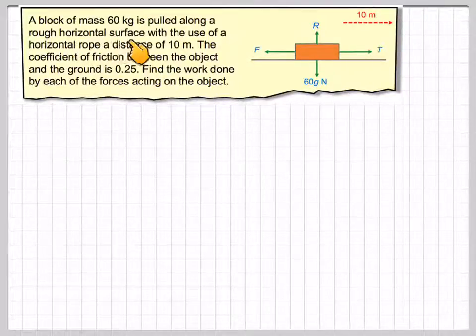A block of mass 60 kilograms is pulled along a rough horizontal surface with the use of a horizontal rope a distance of 10 meters. The coefficient of friction between the object and the ground is 0.25. Find the work done by each of the forces acting on the object.